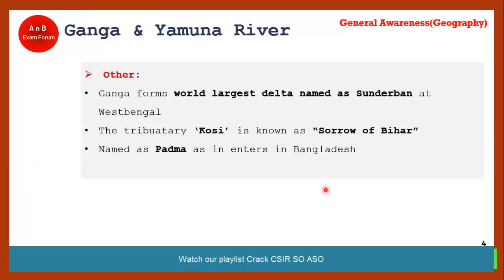Ganga forms the world's largest delta, named Sundarbans, located in West Bengal — this fact appeared in the DRDO September 9 exam. Its tributary Kosi is also known as the 'Sorrow of Bihar' because it causes devastating floods in Bihar. When Ganga enters Bangladesh, it is known as Padma river.